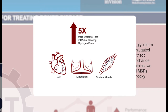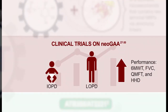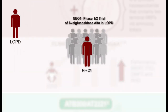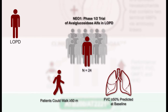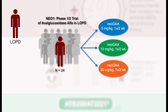Avalglucosidase alfa is in development for both infantile-onset and late-onset Pompe disease. In a phase 1/2 trial, 24 patients with late-onset Pompe disease were treated — 10 treatment-naive and 14 previously treated with alglucosidase alfa for at least nine months. All were adults who could walk at least 50 meters independently with upright forced vital capacity of at least 50% predicted. They were treated for 24 weeks at three dose levels — 5, 10, or 20 mg/kg — all once every two weeks by IV infusion.